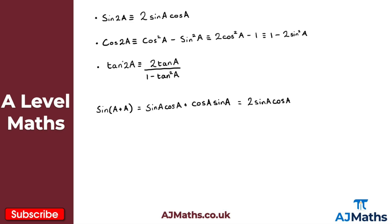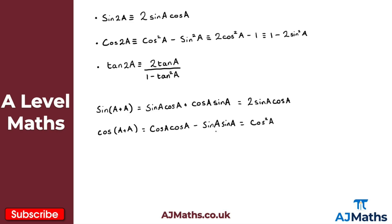Now let's look at cosine 2a. We follow a similar pattern and express this as cosine of a plus a. Using the addition formula from the previous video, we get cos a times cos a minus sine a times sine a. That simplifies to cos²a minus sin²a — which is the first form of our cosine double angle formula.